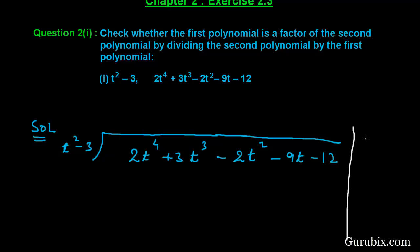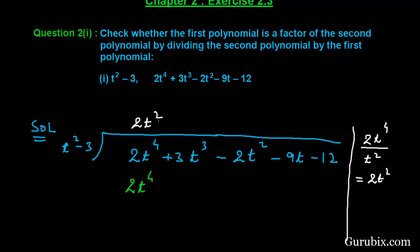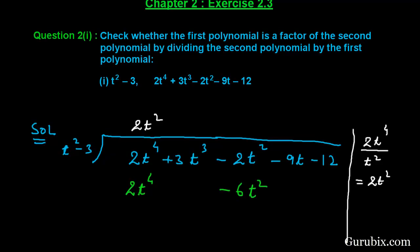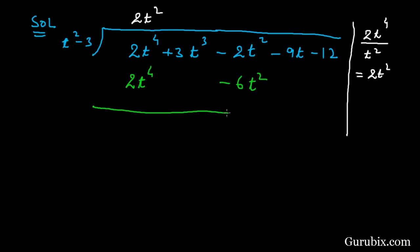To find the first term of the quotient, we divide the first term of the dividend — 4t raised to the fourth power — by the first term of the divisor, t squared. This gives us 4t squared as the first term of the quotient. We then multiply both terms of the divisor by 4t squared to get 4t to the fourth power and minus 6t squared, and we change the signs of these terms.